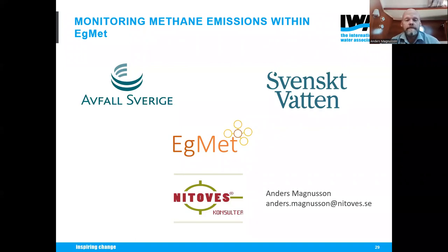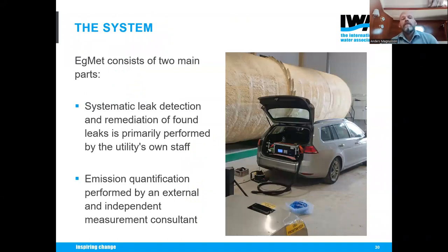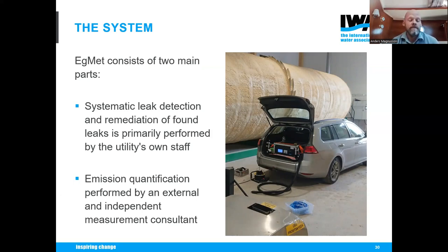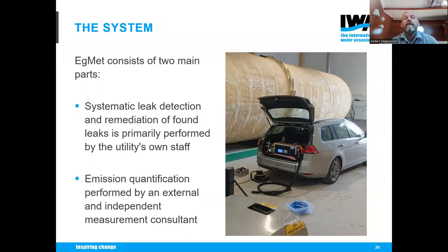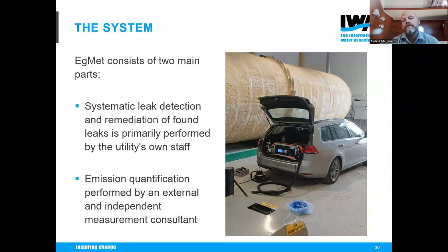Within the system, we try to systematically reduce methane emissions through: systematic leak detection — helping plants do leak detection and repair in a systematic way, performed by staff with EGMET support; and emission quantification, done by an external consultant every third year. I will discuss emission quantification further, but first Annette will describe how they do this on site.